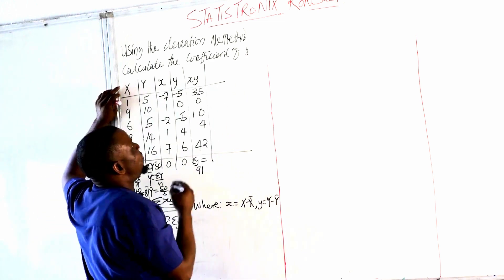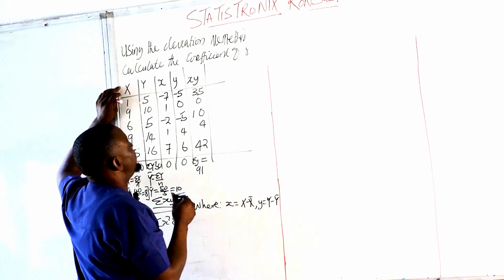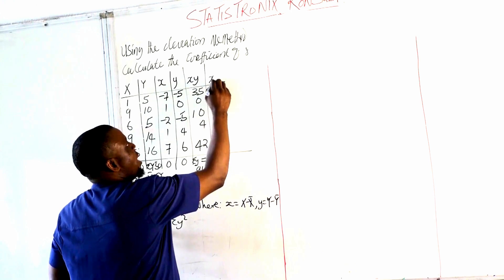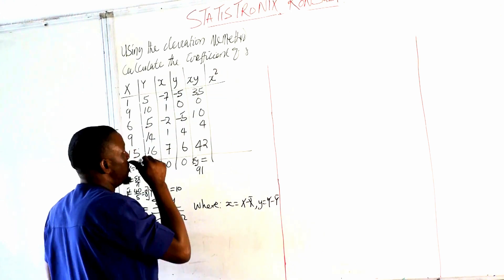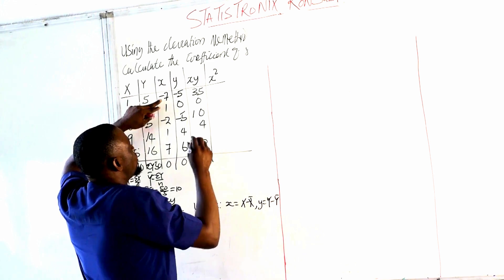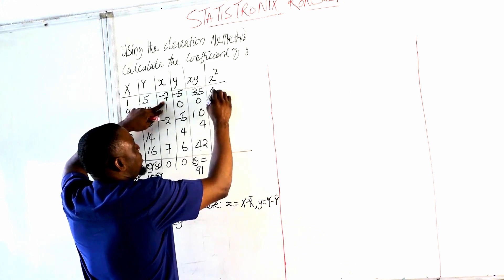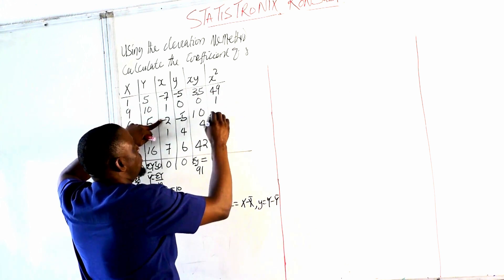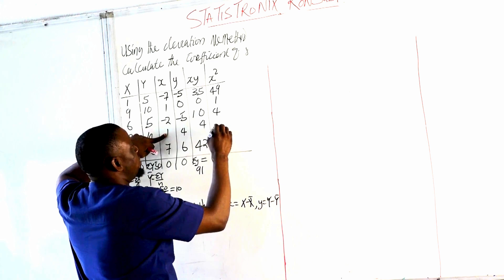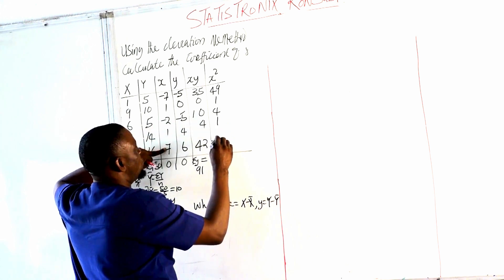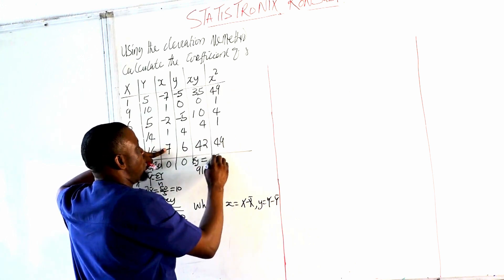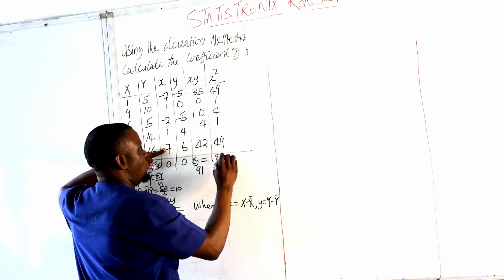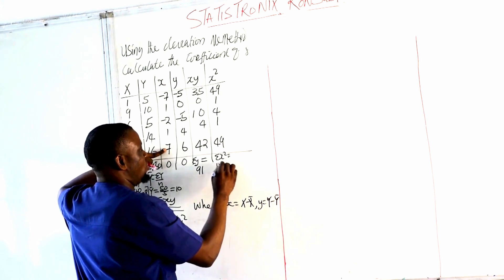So the next thing we'll be having is from the formula, we have sum of X². So we'll create a column and call it X². So this is our small x. So if we square this value, minus 7², 1², minus 2², 1², 7². Now again, if we sum our X², it will give us sum of X² is 104.